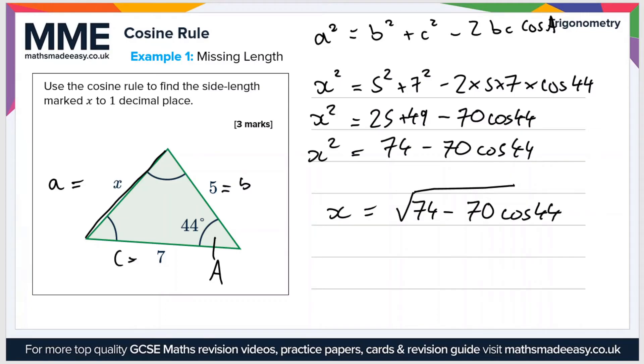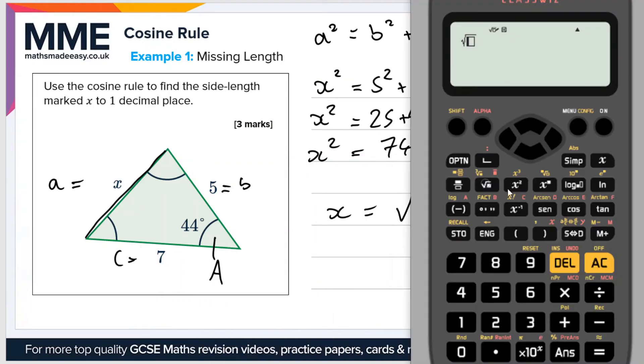So if we plug that into the calculator. So the square root of 74 minus 70 cos 44. Remember to close the brackets.